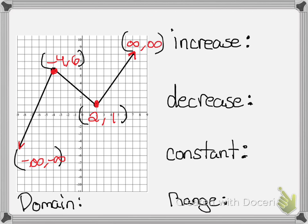You will always draw a roller coaster on the far left of the graph and draw yourself sitting in it. So when you push me, am I going to go up, down, or stay constant? I am definitely going to go up, so that means I'm increasing. And then once I get to this point right here — negative 4, 6 — I'm going to decrease, and then I'm going to increase again.